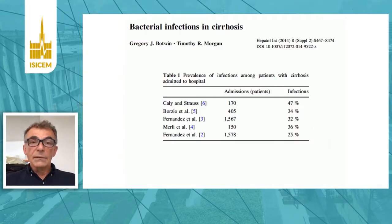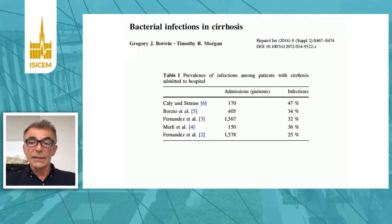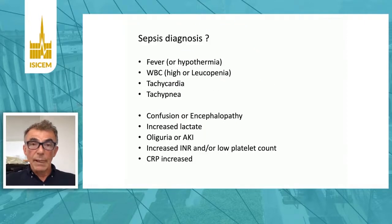This slide shows the incidence of infection in patients admitted to hospitals — not even in the ICU, but to the hospital. You can see that at least a third of patients or more have infection at the time of admission to hospital. So how do we diagnose sepsis in this population?